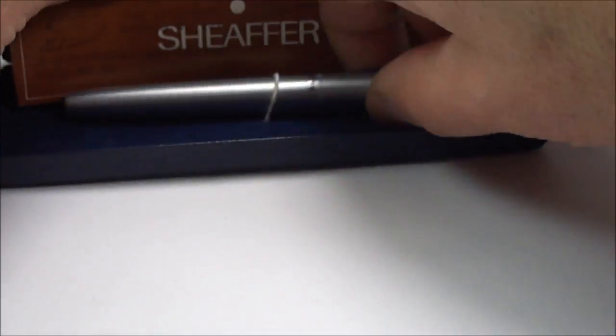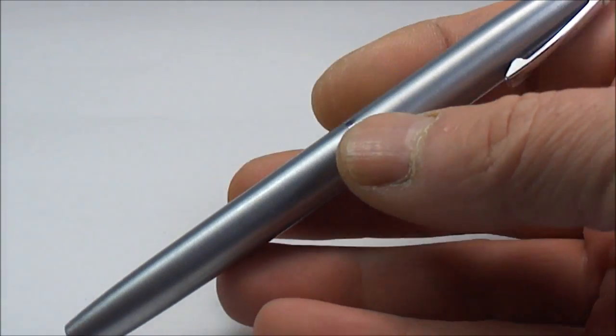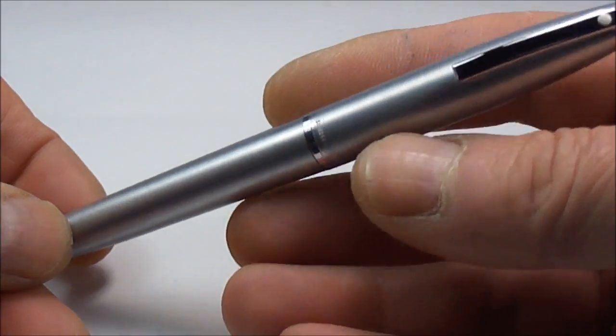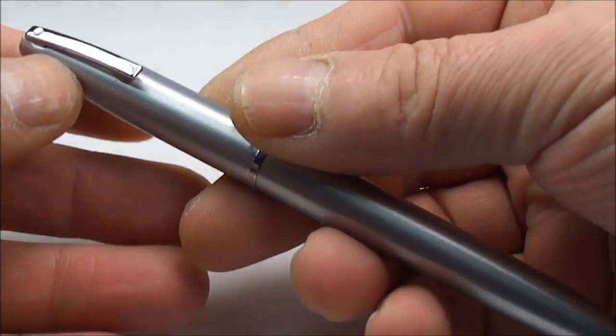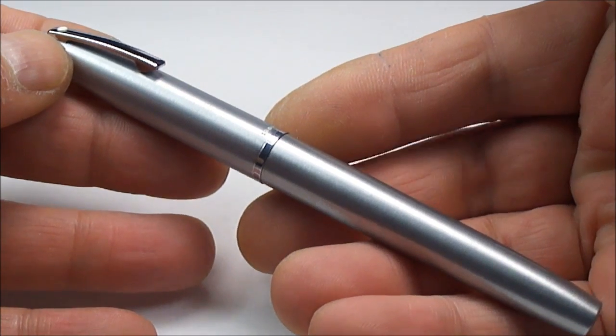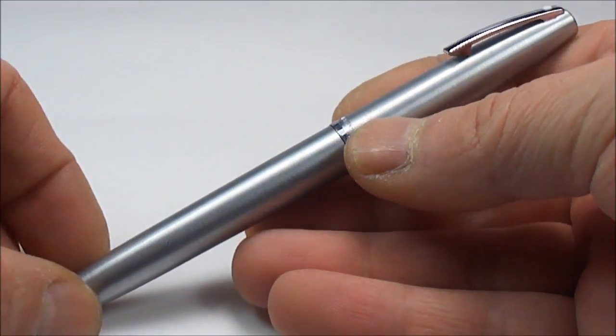This sounds about right because this particular pen was launched in the region of the 1970s. What we have here, ladies and gentlemen, is a lovely example of a Sheaffer Triumph Imperial fountain pen. This particular one, the model number is a 444.